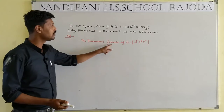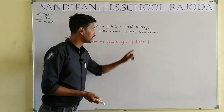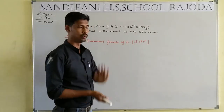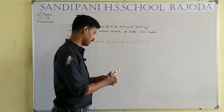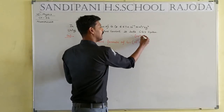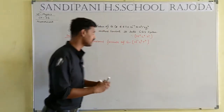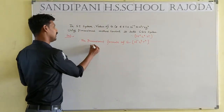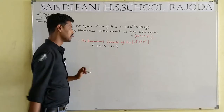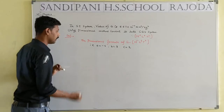In the case of the dimensional formula, we know that the dimensional formula of capital G is M⁻¹L³T². Comparing this with M^A · L^B · T^C, we get: A = −1, B = +3, and C = +2.